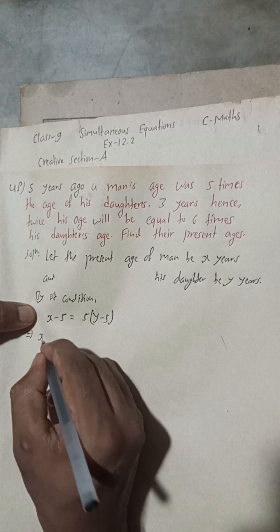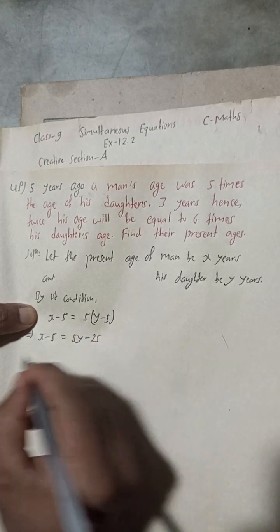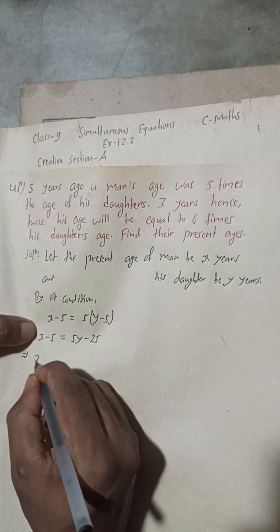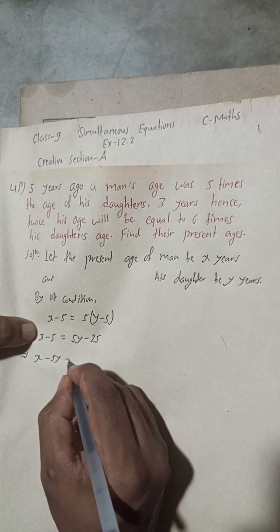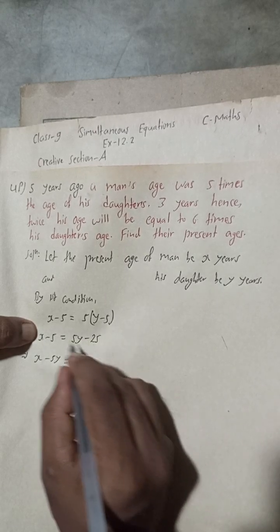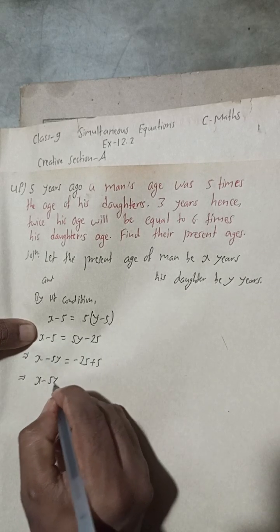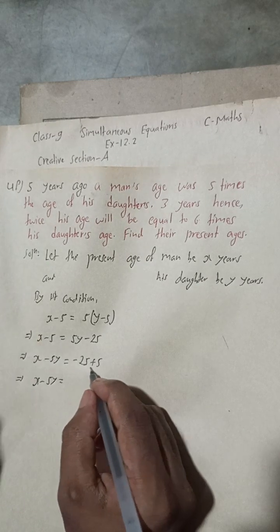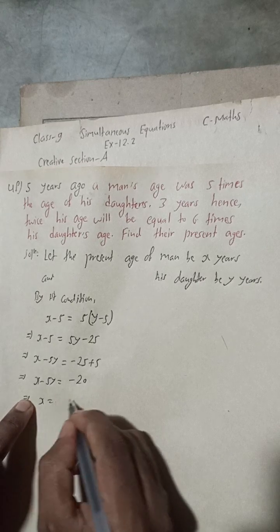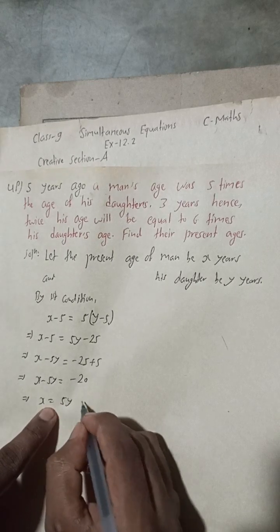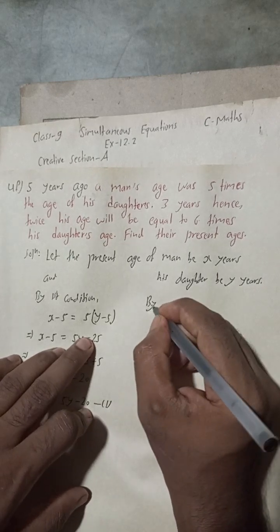This gives us: x minus 5 = 5(y minus 5), which implies x minus 5 = 5y minus 25. Rearranging, x minus 5y = minus 25 plus 5 = minus 20. So x = 5y minus 20. This is equation 1.